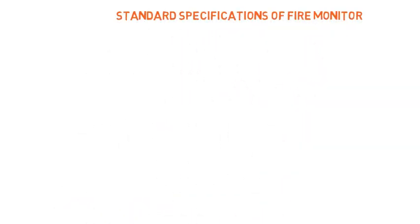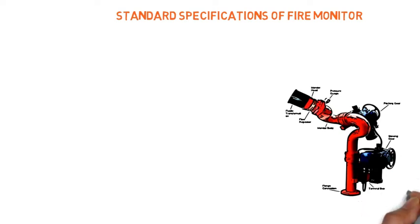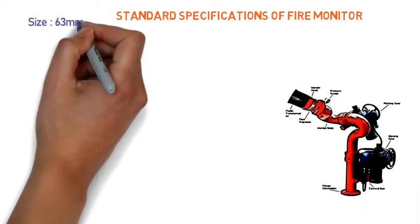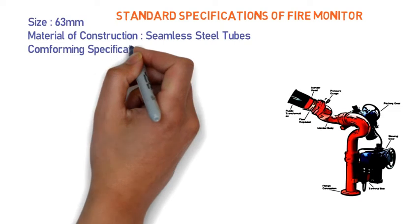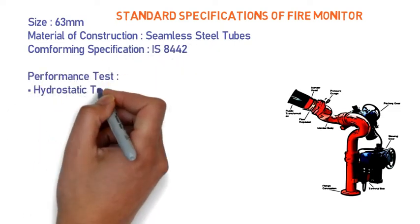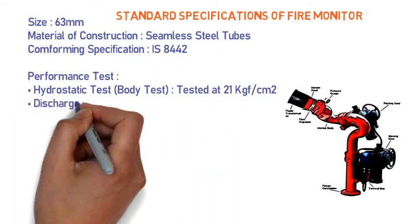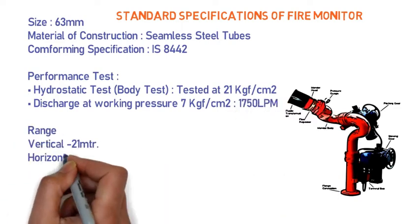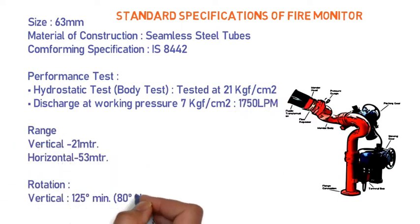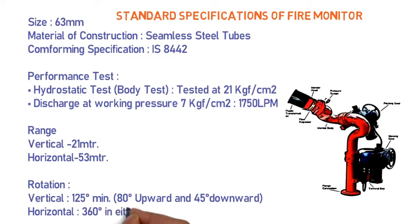Next, the standard specifications of a fire monitor. A standard fire monitor has a diameter of 63 mm. The metal used for construction is steel tubes and the highest standard is 8442. The performance tests for a fire monitor are: first, hydrostatic pressure testing, and second, discharge testing.